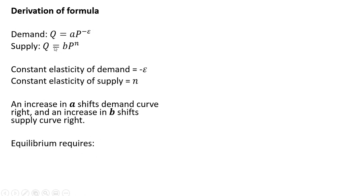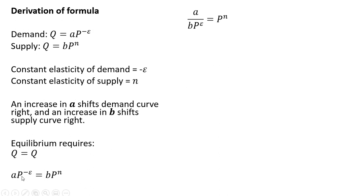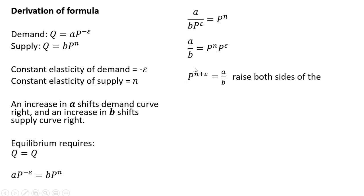Equilibrium requires that the quantity demanded equal the quantity supplied. Setting those two equations equal to one another, we're going to solve for p. I'm going to divide through by b, giving us this result, and then move the p raised to the minus e into the denominator. Now I'm going to cross multiply, moving p raised to the exponent e over to the right-hand side, and we can add up the exponents on the right-hand side, giving us this result.